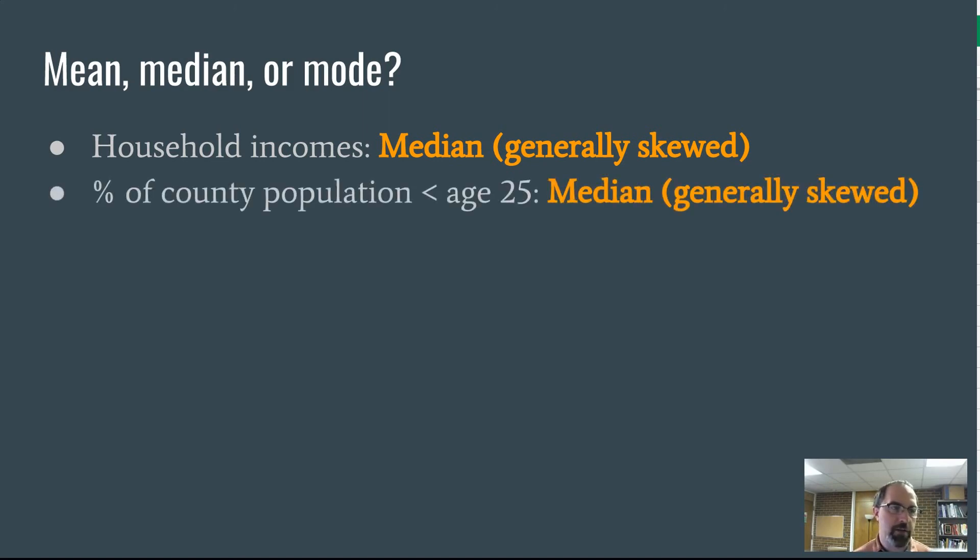Similarly, percent of county population under age 25 will have outliers as well. Think about Clark County in relation to the rest of Georgia. Clark County would really be an outlier with this. We have something like 20% of our population is under age 25, where for many places it's going to be more like 20% as well, because we have such a high college age population.